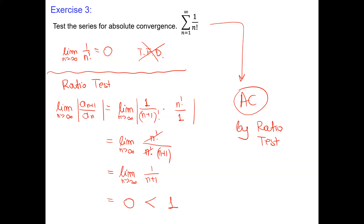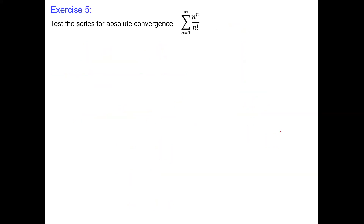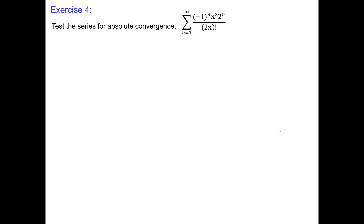The ratio test is a nice tool — you will like it. Now exercise number four: the series (-1)^n · n² · 2^n / (2n)! contains a power form, an exponential form, and a factorial form. I'm definitely trying the ratio test, because by creating this ratio we may simplify several expressions. Hopefully the limit is not 1, since if the limit is 1, the ratio test is inconclusive.